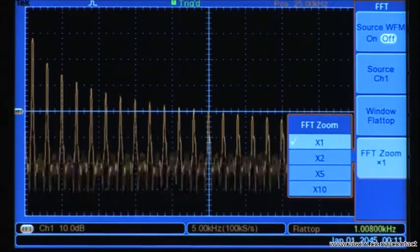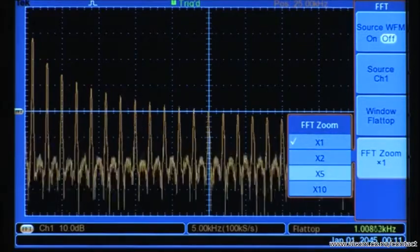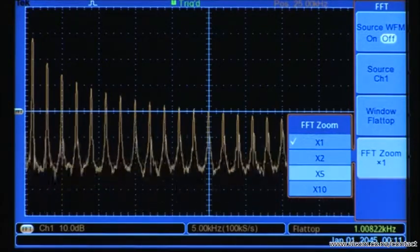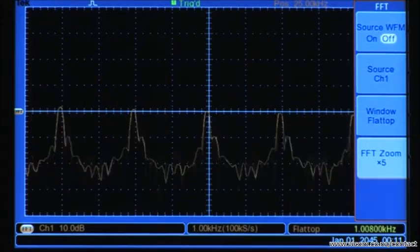The FFT zoom control spreads the horizontal scale out without changing the sample rate. This simply makes it easier to see the frequency components. For this example, we'll set the zoom factor to x5.